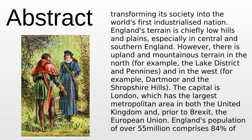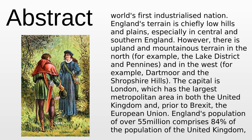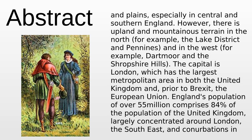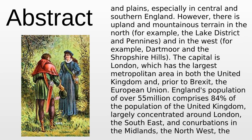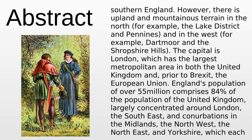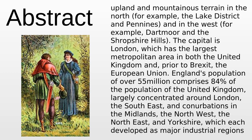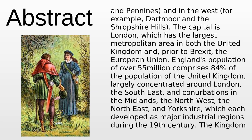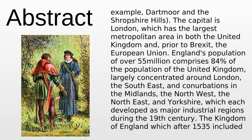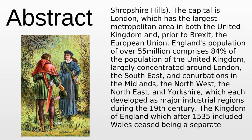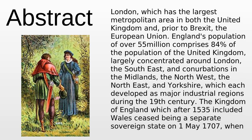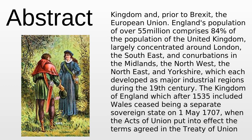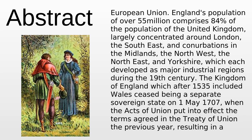England's terrain is chiefly low hills and plains, especially in central and southern England. However, there is upland and mountainous terrain in the north, such as the Lake District and Pennines, and in the west, such as Dartmoor and the Shropshire Hills. The capital is London, which has the largest metropolitan area in both the United Kingdom and, prior to Brexit, the European Union. England's population of over 55 million comprises 84% of the population of the United Kingdom.